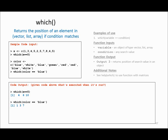The which function is used to find out the position of an element in the data. For example, I have some numbers in my variable x and I want to find out the positions where 5 is present. When I say which(x == 5) it gives me all the positions where 5 exists in my data — in this case positions 4, 6, and 10. Looking at the original data, 5 is present at positions 4, 6, and 10.